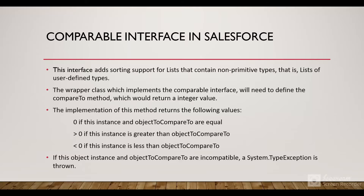The wrapper class which implements the Comparable interface will need to define the compareTo method, which returns an integer value. If both the current instance and the object to compare to are equal, return 0. If the current instance is greater than the object to compare to, return a value greater than 0. If the current instance is less than the object to compare to, return a value less than 0. If the instances are incompatible, a TypeException is thrown.